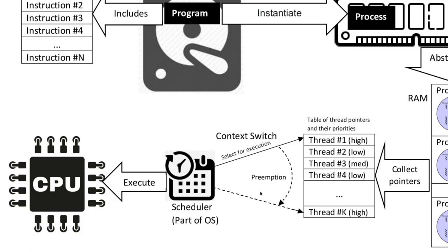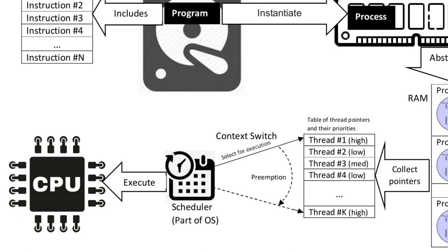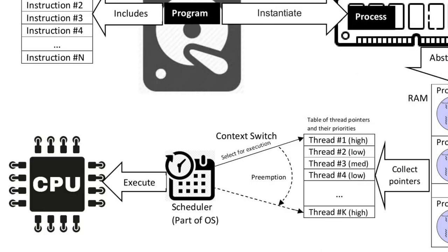The CPU runs these threads and switches between them quickly. When you write a program, you can have multiple threads in a single process. There is a threading library in Python that comes by default — you don't need to go deep into how the OS or kernel handles it. You can just use it and run two while loops at the same time. I'll show you how in the next video.